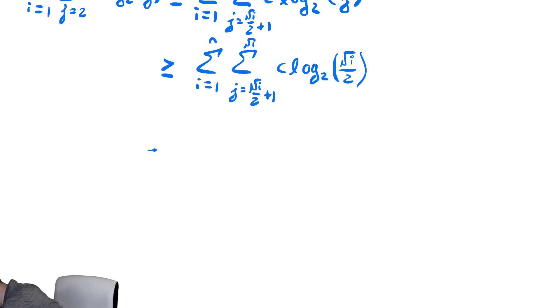So this is equal to the sum from i equals one to n of the number of terms, which is the top minus bottom plus one. We designed it on purpose to be radical i over two, though. We don't even need to compute it. I know that that will simplify to radical i over two because that was by design. So this is c log base two of radical i over two, that's multiplying it.